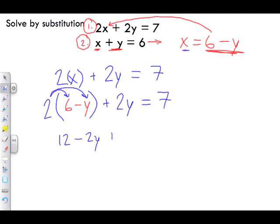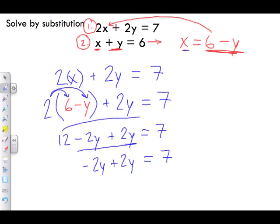Here we want to isolate for the y's. We have -2y + 2y = 7. We want to keep the y's on one side and move the whole numbers over. When we move this 12 over, it becomes -12.